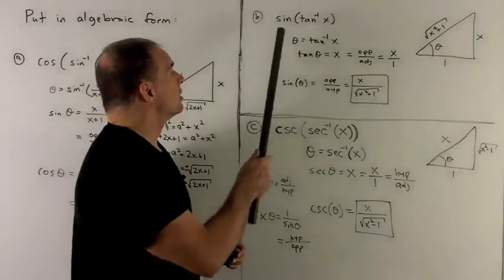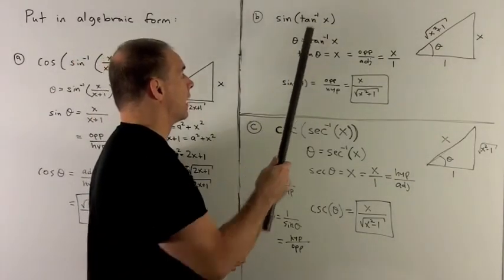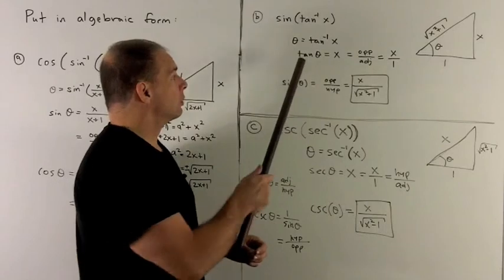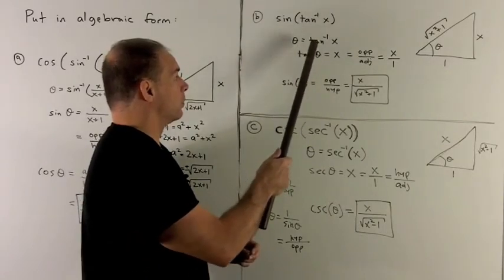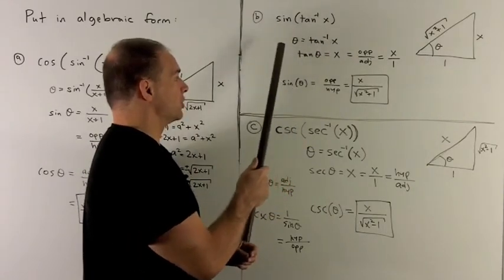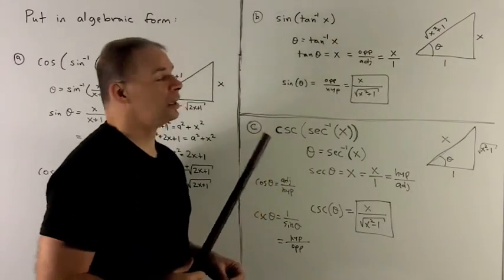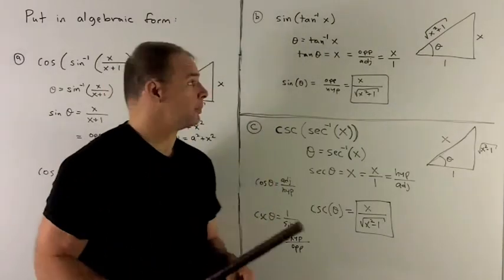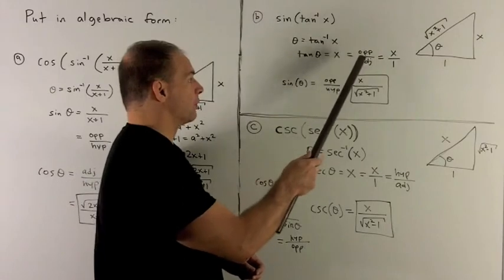So let's try sine of tan inverse of x. We do our language trick. Theta equals tan inverse of x. And then I push the tangent to the other side. Same trick as here. I'm just going to write x as opposite over adjacent.